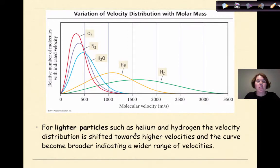So for lighter particles, such as helium and hydrogen, the velocity distribution is shifted towards higher velocities, more towards a peak here, which are obviously higher velocities. And the curve becomes broader, indicating a wider range of velocities. So that means, on average, even though they have higher velocities, some velocities of hydrogen molecules are even higher, and some are lower. Same thing with the helium. The average velocity would be around here, but some of those particles have a higher velocity, or lower, depending on individual particles.